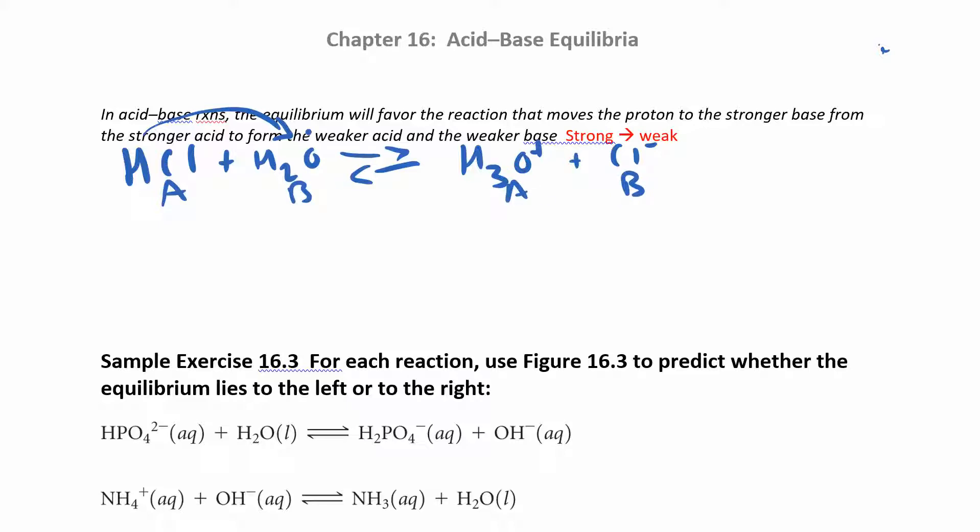Okay, so remember how we find our conjugate acid-base pairs? You're going to have an acid and a base on both sides. The pairs are here, one on each side.